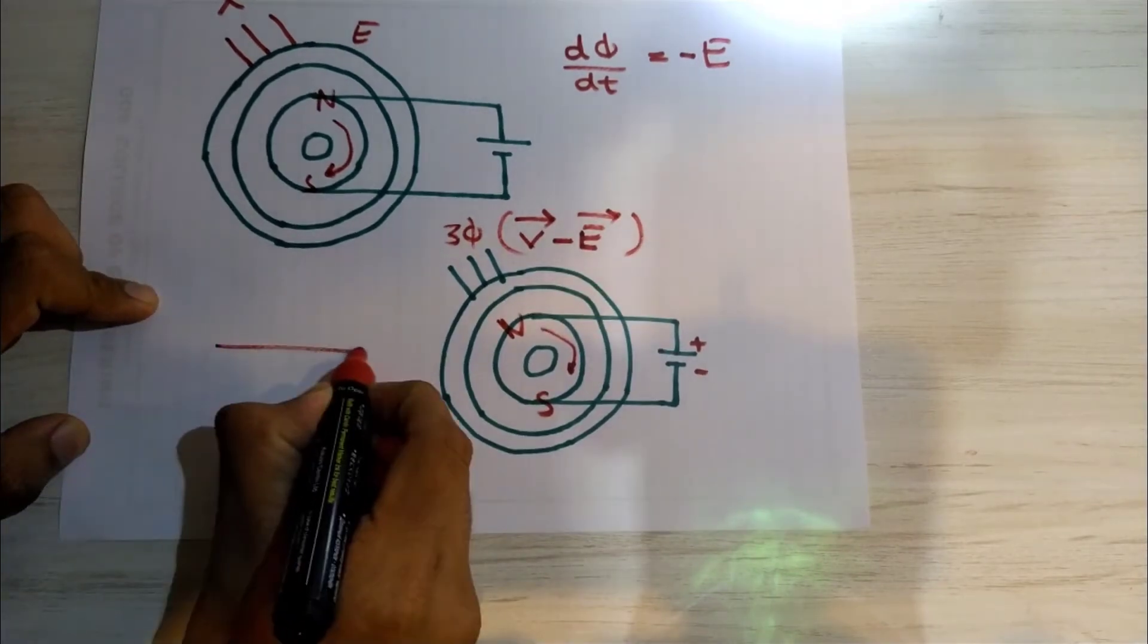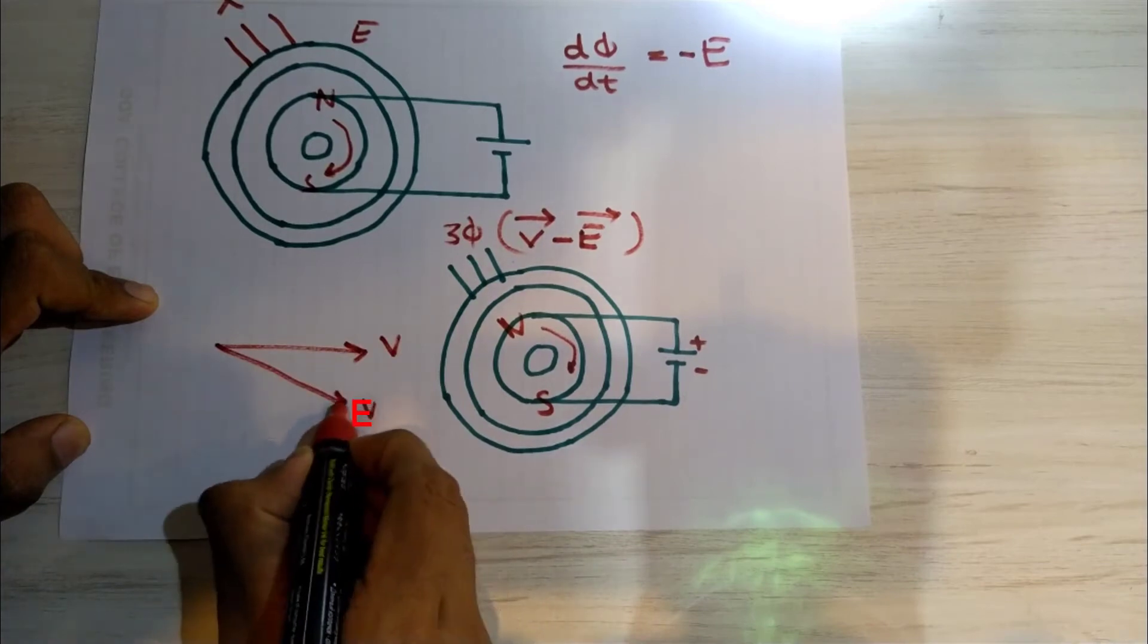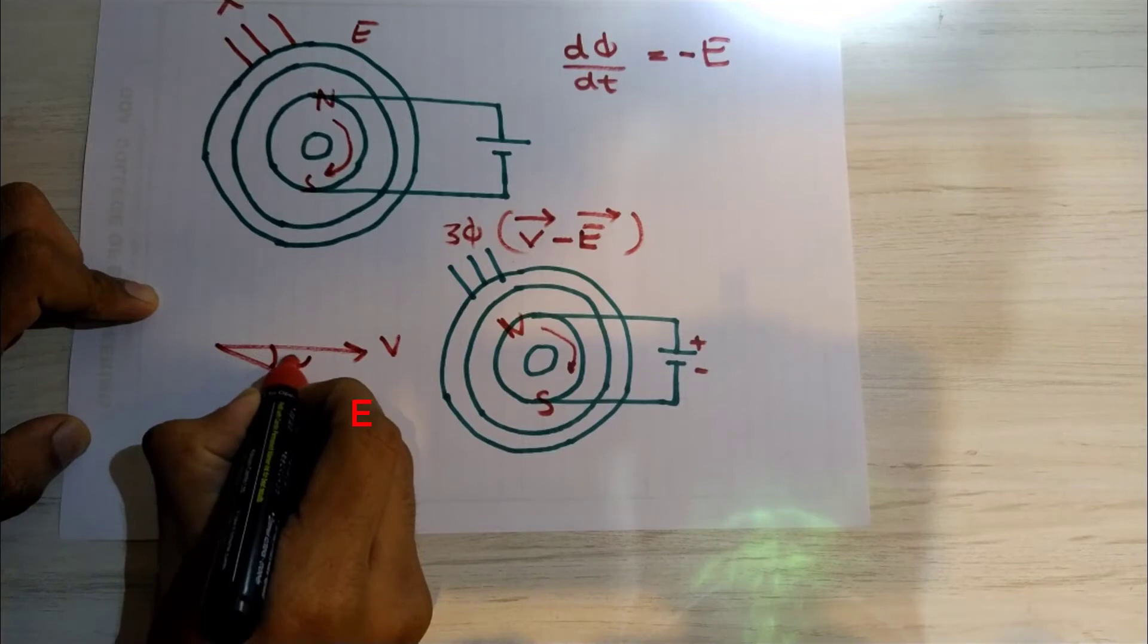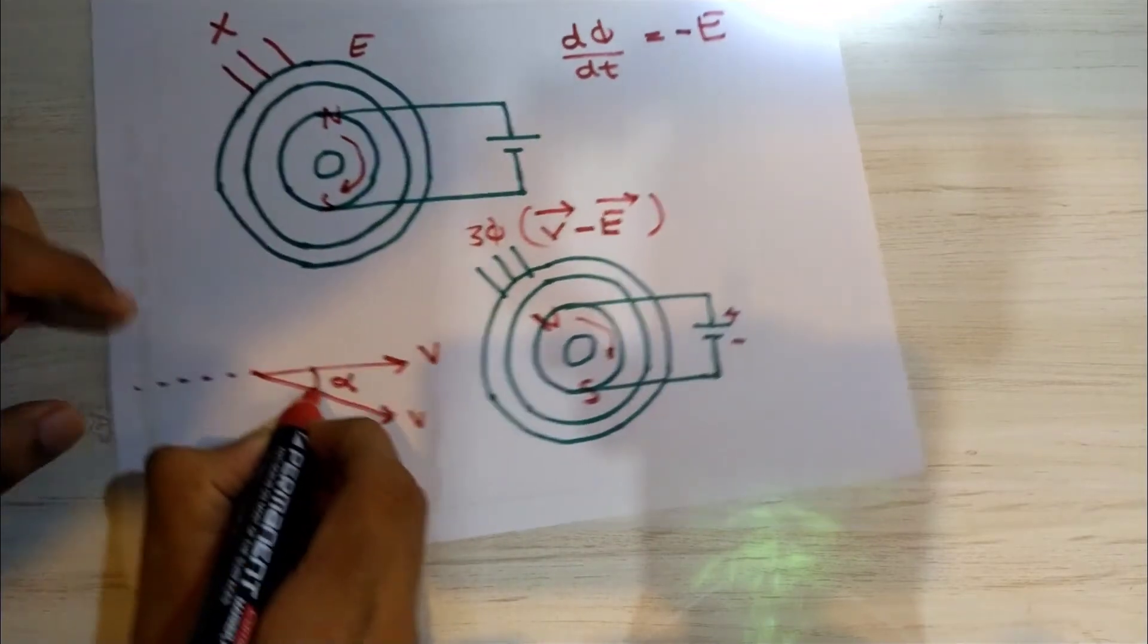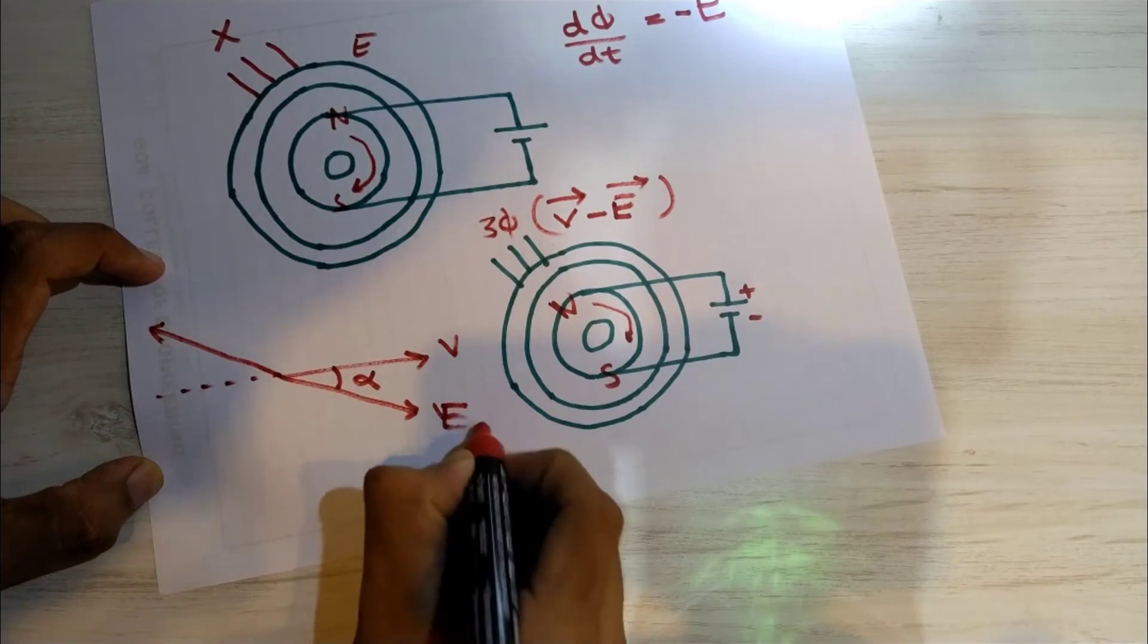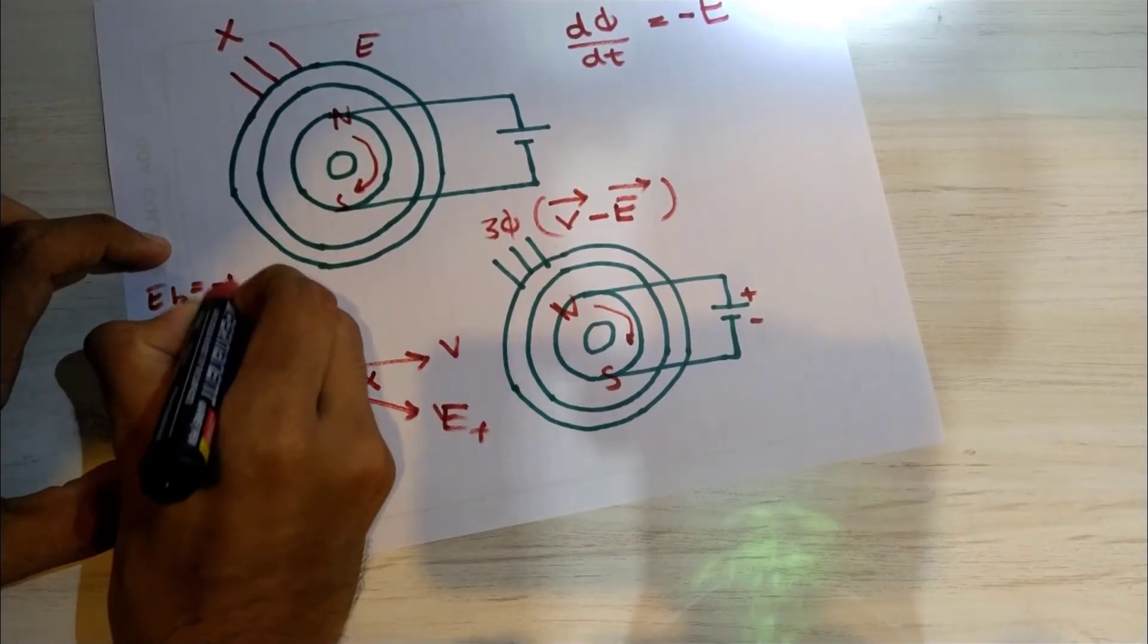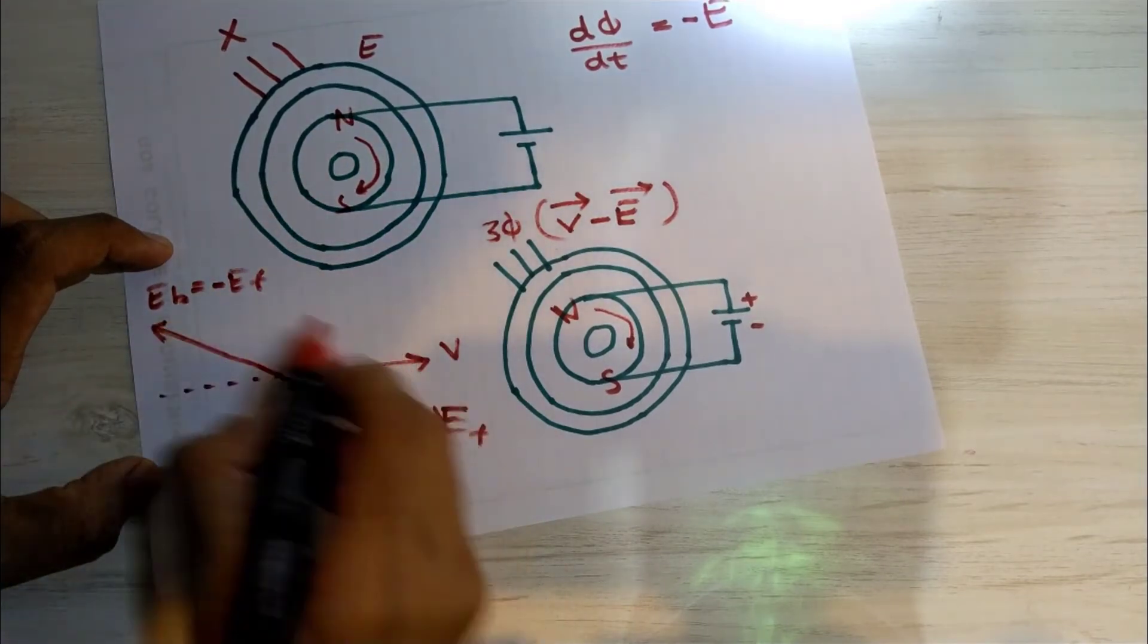If we draw the phasor diagram, we'll see V here and E here. This is the EMF produced in the stator coil, and they both lag each other by an angle alpha, which is the load angle. If we extend this by 180 degrees, this was our EF in general notation, and this is EB. EB is nothing but minus EF. This is our back EMF, and this is our terminal voltage.